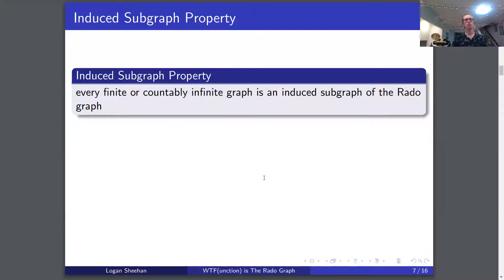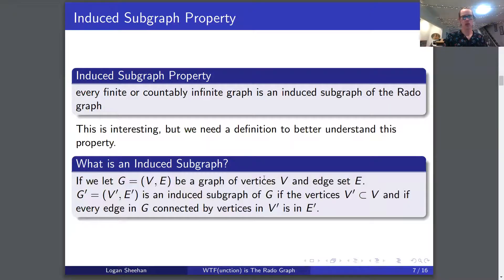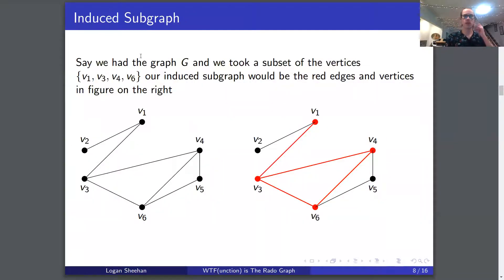Now onto our next property, the induced subgraph property. Every finite or countably infinite graph is an induced subgraph of the Rado graph. That means every finite and countably infinite graph can be found inside of the Rado graph, and that's really cool. But we need a better definition of what an induced subgraph is. If we let g equal v e and g prime equal v prime e prime, it is an induced subgraph of g if the vertices v prime are a subset of the vertices in v, and if every edge in g connected by vertices v prime is in e prime. So if we have graph g and took a subset of vertices v1, v3, v4, and v6, our induced subgraph would be all of the red edges and red vertices in the figure on the right.